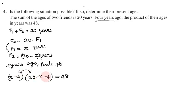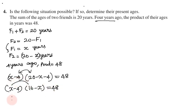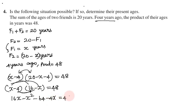Four years ago the product of their ages was 48, so: (x - 4)(20 - x - 4) = 48, which gives (x - 4)(16 - x) = 48. Expanding: 16x minus x squared minus 64 plus 4x equals 48, giving 12x minus x squared minus 64 equals 48.